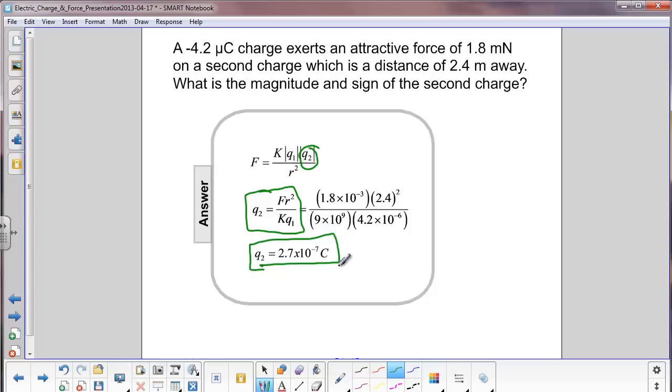Now, what's the sign of this charge? Well, we have a negative charge here. We're given that one. And we're told this second charge is being attracted to it. So if it's being attracted, it has to be an opposite charge. Therefore, this second charge is positive: positive 2.7 times 10 to the minus 7 coulombs.